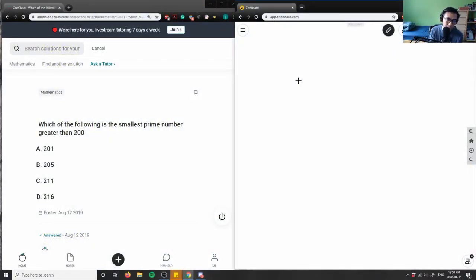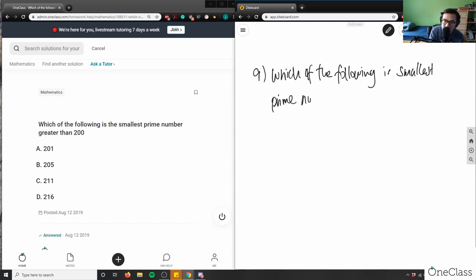Which of the following is the smallest prime number greater than 200?